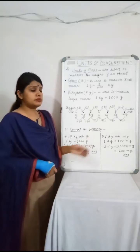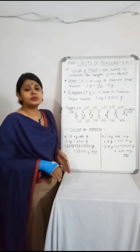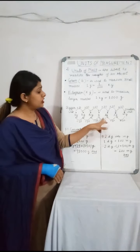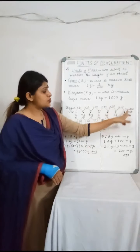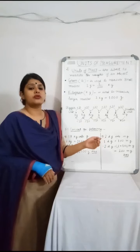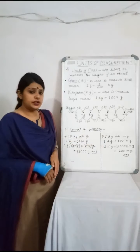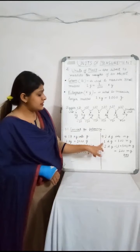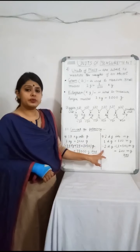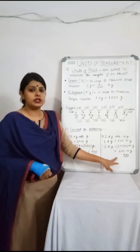B. Convert 2 decigrams into milligrams. Decigram is here and we have to move until milligrams — that is 2 steps ahead. For moving 2 steps ahead, we multiply by 100. That is 1 decigram is equal to 100 milligrams. So 2 decigrams will be 2 multiplied by 100, that is 200 milligrams.